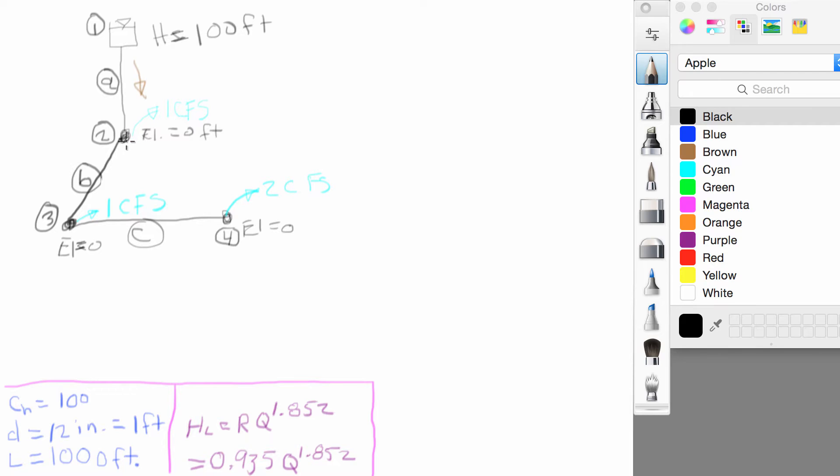So we're going to close a loop here. We're going to draw a pipe D. It also has roughness of 100, diameter of one foot, and a length of 1,000 feet. None of the nodal demands are changing. We don't have to add any more junctions.